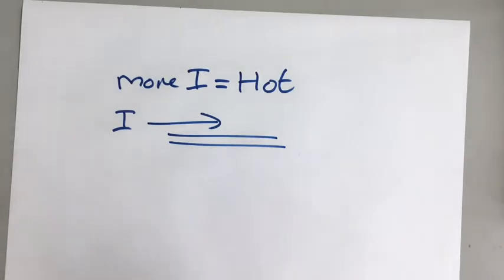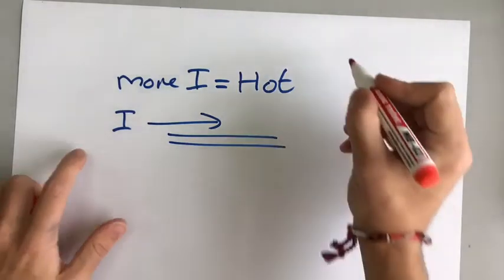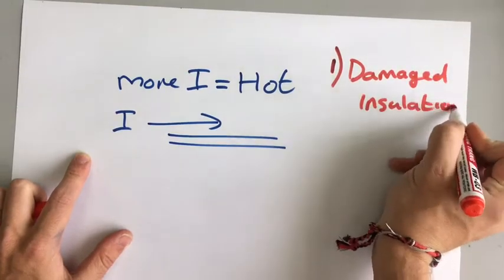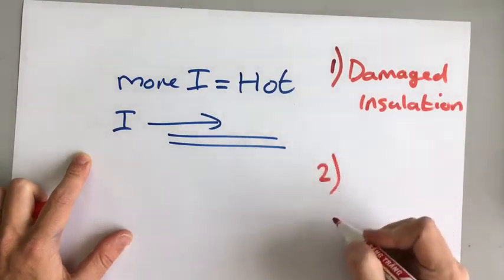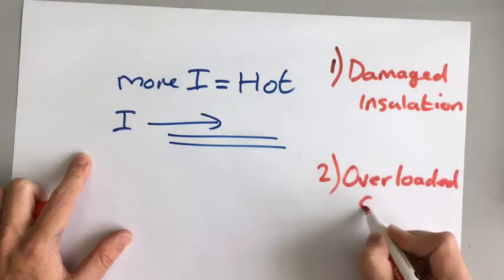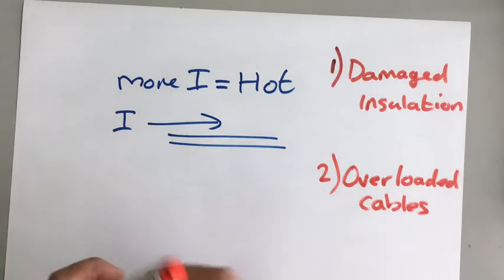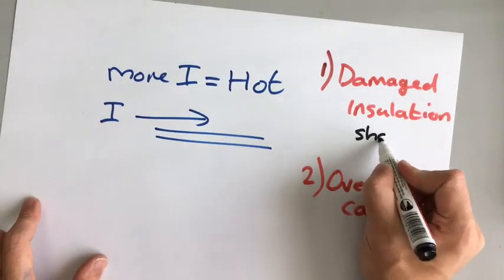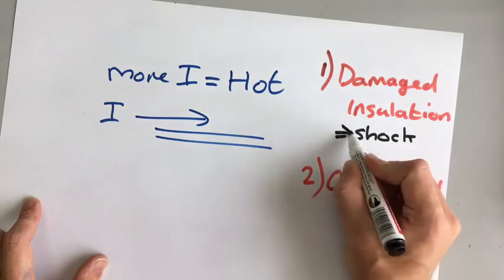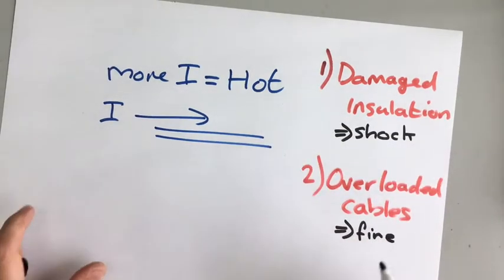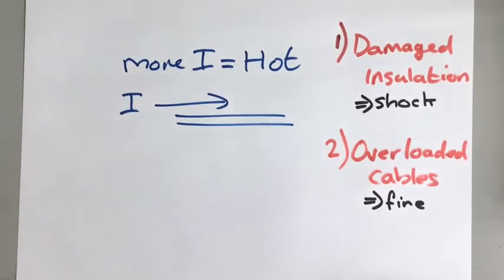So the first thing that we talked about was damaged insulation. The second thing we've talked about is overloaded cables. The damaged insulation could lead to an electric shock and overheated cables could lead to a fire because those cables could melt or cause a lot of heat to be released.